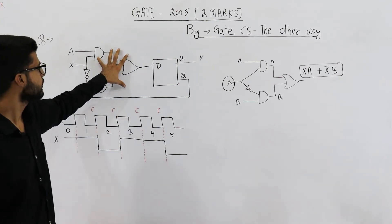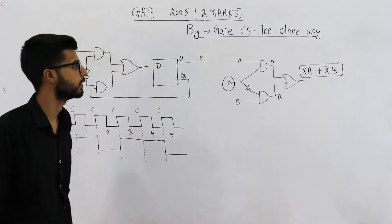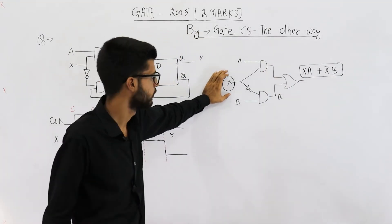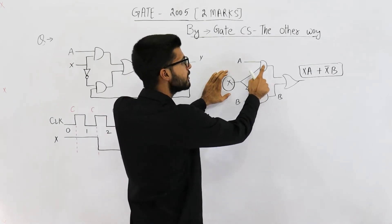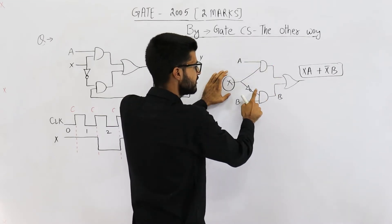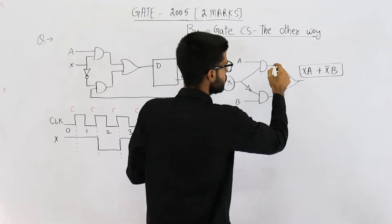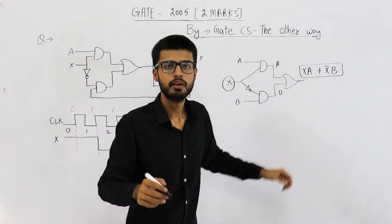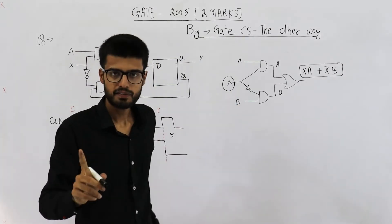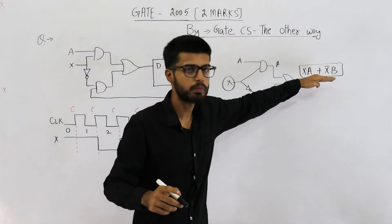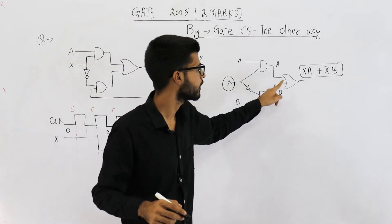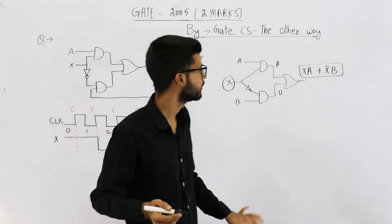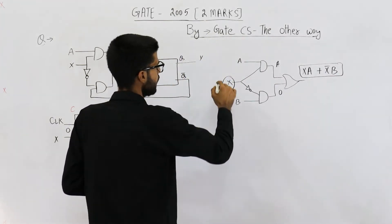Let's analyze the input D to this circuit. When X is 1, this AND gate will output 0, and this AND gate will output A, because 1 AND A is A and 0 is blocked. So when X equals 1, the output is A. When X equals 0, the output is B. This circuit is essentially a multiplexer with X as the select line — when X is 1 input A passes, when X is 0 input B passes.